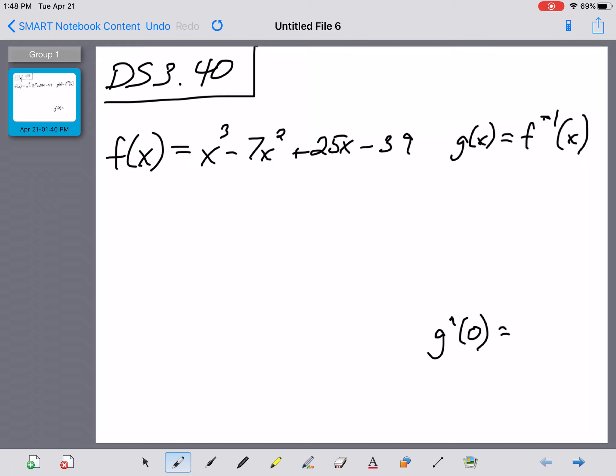In this problem, we've been given a function, and it's a complicated one, a cubic function, and they tell us that g is the inverse of f, and they want us to find the value of g prime of 0. If you're wondering why I wrote this out and set it up this way, it's because I recognized right away what kind of problem this was.